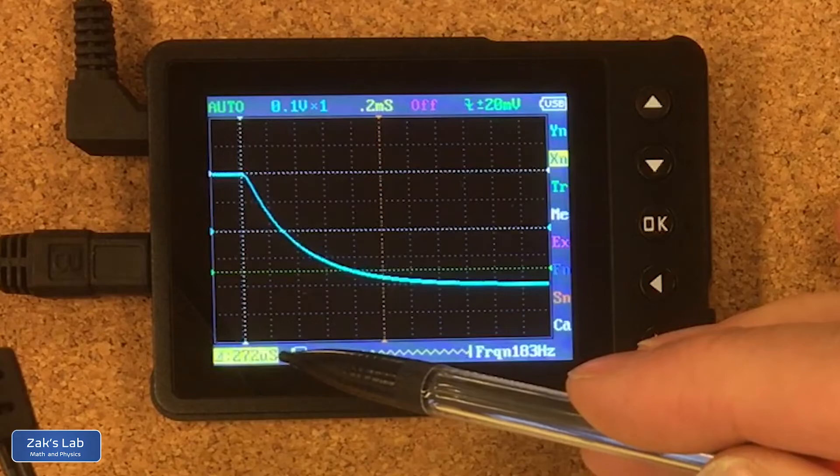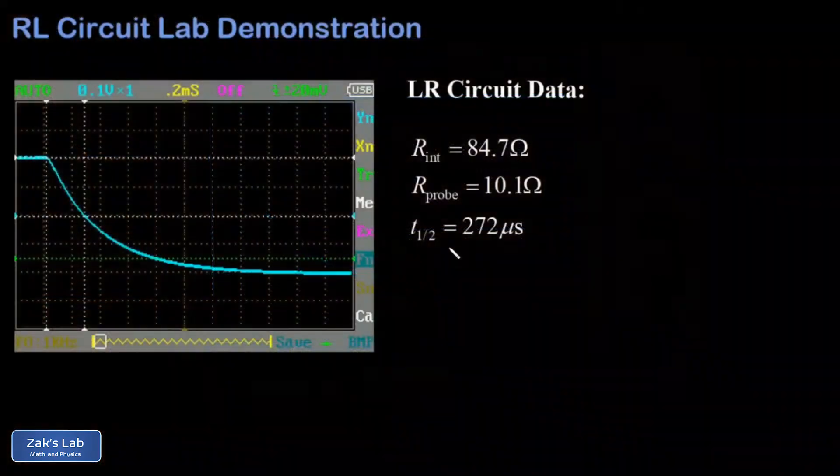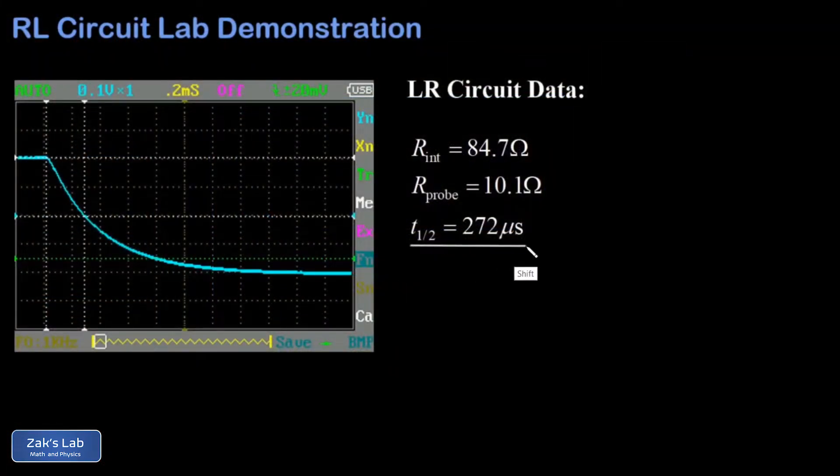Now that we have our half-life of 272 microseconds and we've got our internal resistance of the inductor and the probe resistor, we can quickly compute the total resistance of the circuit by just adding these two resistances and that gives me 94.8 ohms. We plug into our half-life formula, again that's given by L over R times natural log of 2 where we're talking about the total resistance in the circuit, and we solve for L.